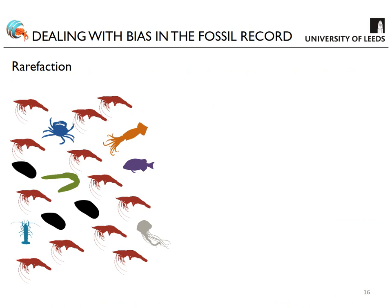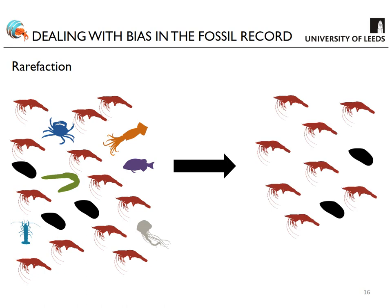However, rarefaction has issues. You're forced to degrade your data down to the level of the lowest sample size, always degrading your best data. This might be okay for investigating relative species richness through time, but it's not a good idea if you're interested in reconstructing community assemblages. Also, rarefaction doesn't deal well when evenness is low — when there are a few dominant taxa and many rare taxa. If you subsample an uneven dataset using rarefaction, the rare taxa will always be underrepresented in the rarefied subsample.